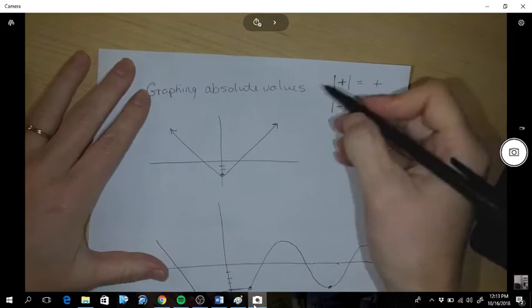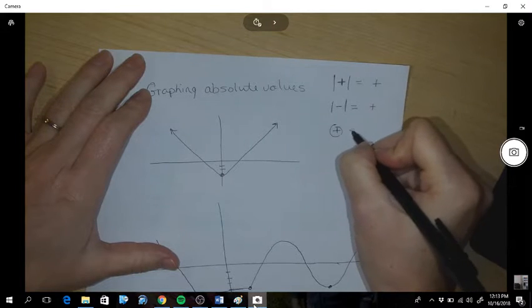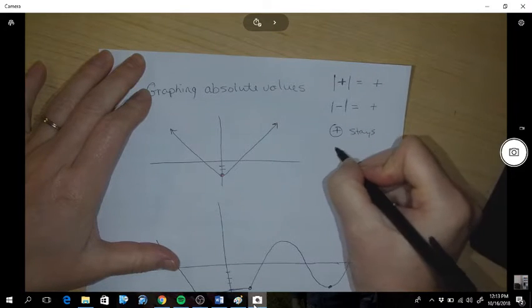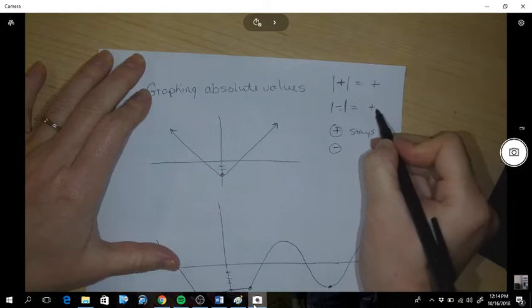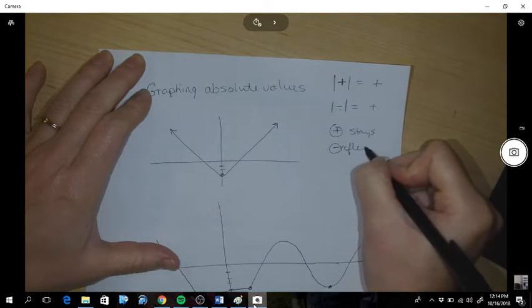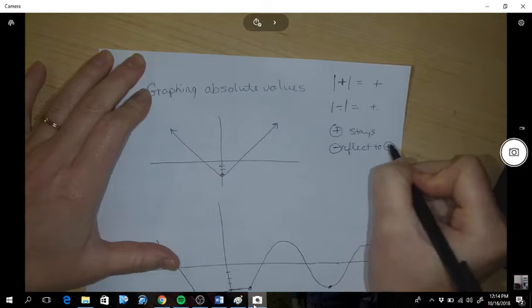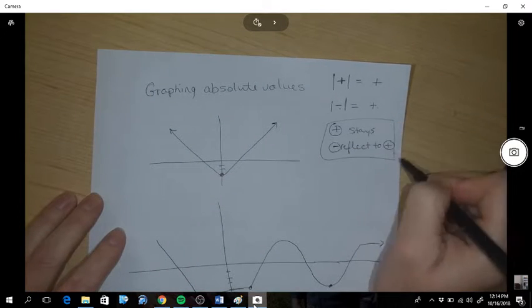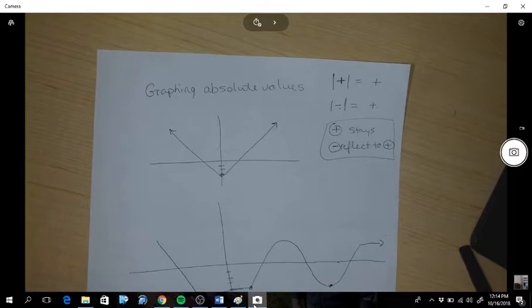So on a graph, if you see a positive, it stays, and if you see a negative, it would flip, it would reflect to the positive. So that's the rules. You know those rules, then you can do this.